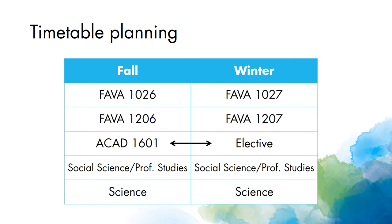Students planning on a full course load will be registering for five courses in the fall and five courses in the winter. This is an example of how the list of courses we reviewed at the beginning of this video might be split over two semesters. The list of science, social sciences, and professional studies course options can be found earlier in this video or under the course selection tab of the NSO website. Electives are other courses you plan to take based on your interests, academic goals, and course availability.